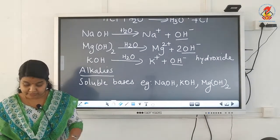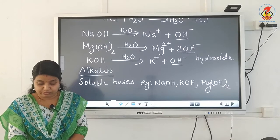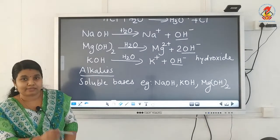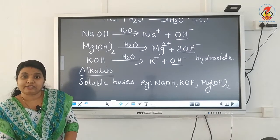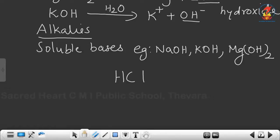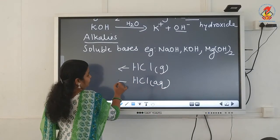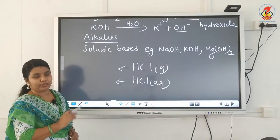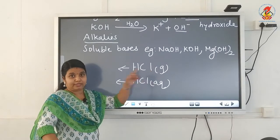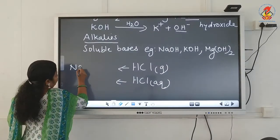Now there is an activity from your NCERT textbook, page number 23, activity 2.9 and figure 2.4, which you have to learn — it was a last year's board question. This activity covers the preparation of hydrogen chloride gas. HCl in its gaseous form is called hydrogen chloride gas, and in its aqueous form it is called hydrochloric acid — both have the same formula HCl.